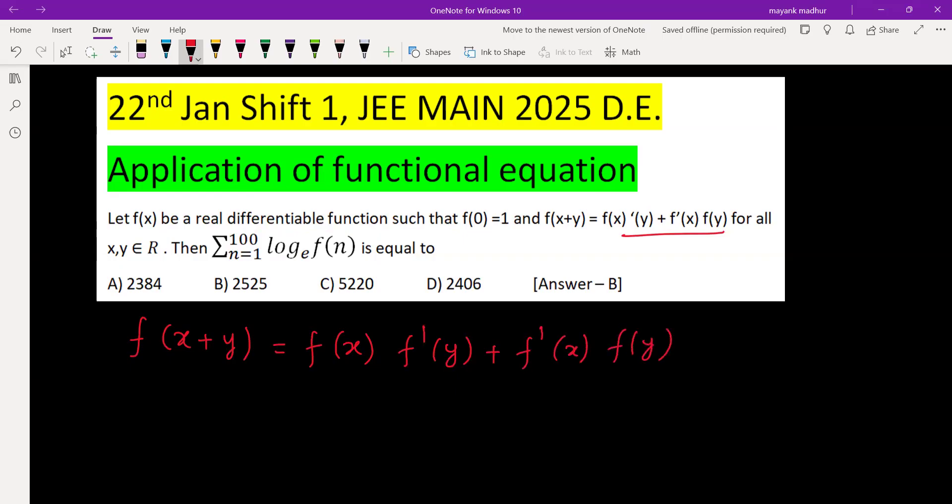In this functional equation, we can put any value of x and y belonging to R. Let's substitute x and y both to be 0 because we have been given f(0) = 1, which can be used here. Putting x and y both 0, we get f(0) = 2·f(0)·f'(0). The value of f(0) is 1, so we can cancel both sides and get f'(0) = 1/2.